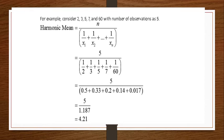For example, consider 2, 3, 5, 7 and 60 with number of observations as 5. So here, in this question,